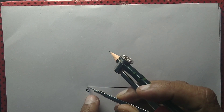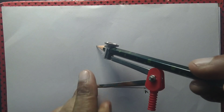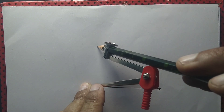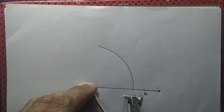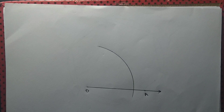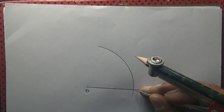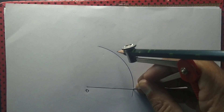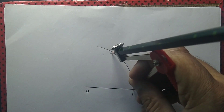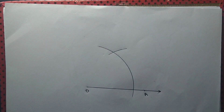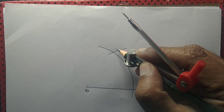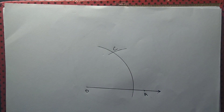Let's construct an angle measuring 60 degrees with the base OA. From the point O we draw an arc, which will intersect OA at some point. From that point, we draw another arc maintaining the same radius. Those two arcs will intersect at some point, say C. Let us join OC.